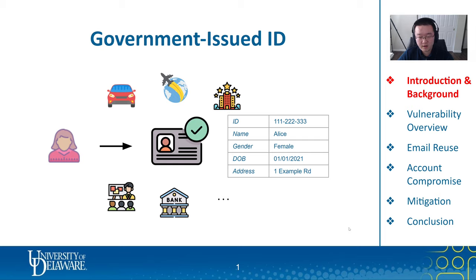We can book flights, reserve hotel rooms, we can get education, open bank accounts, etc. From our perspective as the identity owner and user, we can simply walk into an agency or business, show our ID, and receive the corresponding service. The entire flow is very simple.